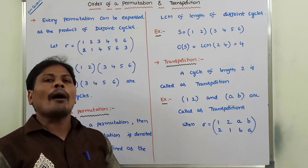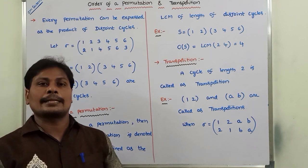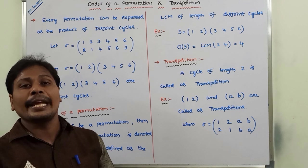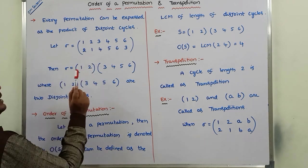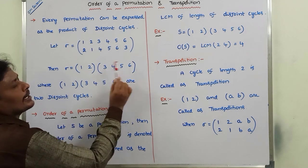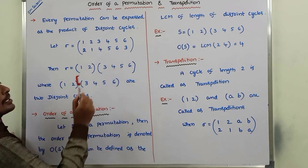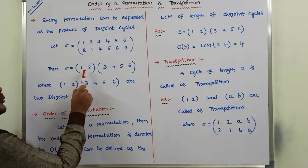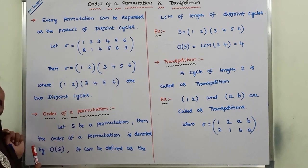Before going to the order of a permutation, first we need to know the definition of disjoint cycles. Two cycles are said to be disjoint cycles if they do not have any common element. For example, one cycle is (1 2) where 1 maps to 2 and 2 maps to 1, and another cycle is (3 4 5 6) where 3 maps to 4, 4 to 5, 5 to 6, and 6 back to 3. There is no common element between them, so these two cycles are disjoint cycles.